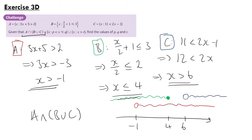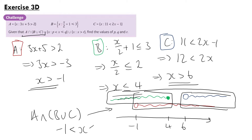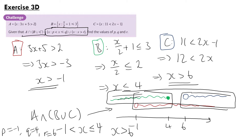B union C is all of that combined. A intersection (B union C) gives us two regions on the number line. The first part is where minus 1 is strictly less than x, which is less than or equal to 4 (open circle at minus 1, filled circle at 4). Also anywhere where x is greater than 6, not equal (open circle). So p equals minus 1, q equals 4, and r equals 6. That is our final answer.